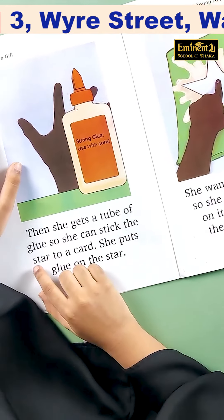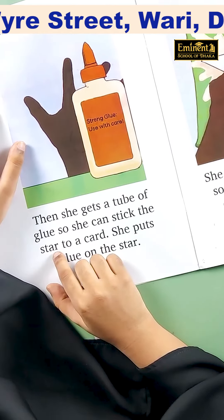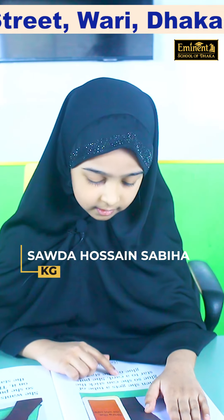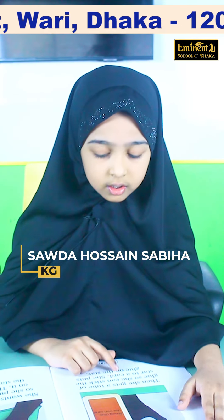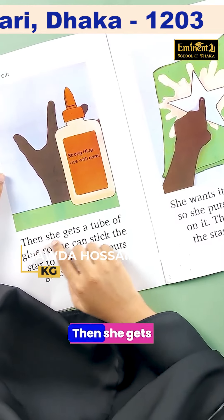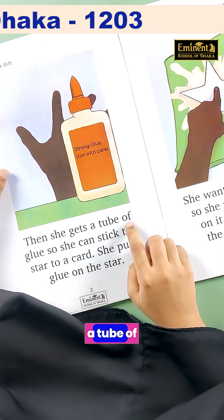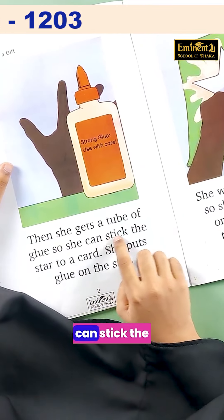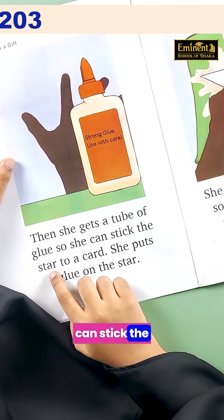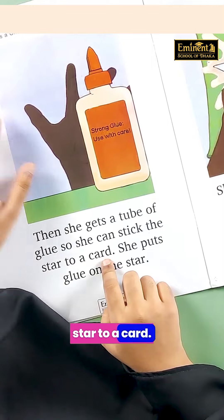They. S, T, R — star. True. Card. Then she gets a tube of glue so she can stick the star to a card.